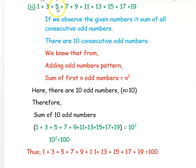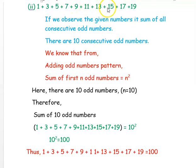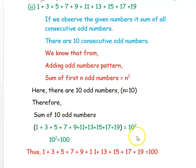The next question is 1 + 3 + 5 + 7 + 9 + 11 + 13 + 15 + 17 + 19. Without adding all these numbers, we want to find the sum. All the given numbers are consecutive odd natural numbers. Counting them gives 10 consecutive odd natural numbers, so n = 10. The sum of the first n odd natural numbers equals n², so the sum equals 10² = 100. Thus, 1 + 3 + 5 + 7 + 9 + 11 + 13 + 15 + 17 + 19 = 100.